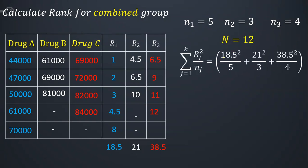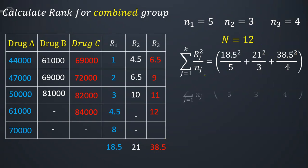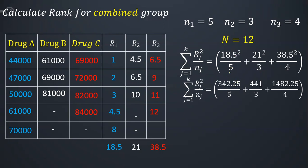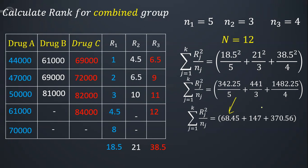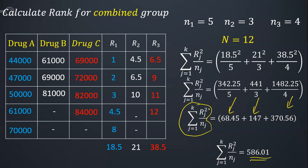Calculating: 18.5 squared is 342.25 divided by 5 gives 68.45; 21 squared is 441 divided by 3 gives 147; 38.5 squared is 1482.25 divided by 4 gives 370.56. Summing these gives 586.01. I will now substitute this in the main formula.